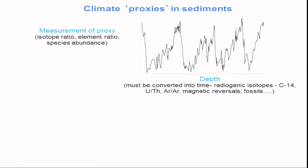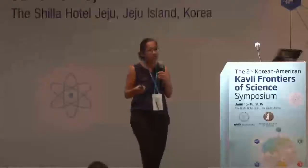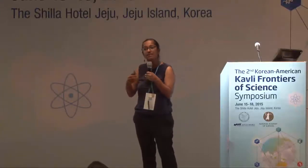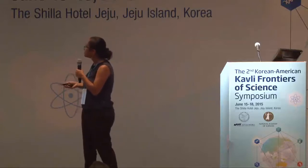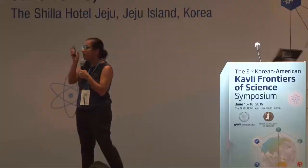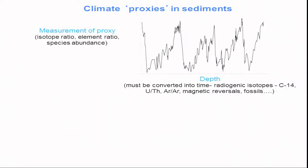What we do in terms of developing our climate records is take the measurement of some proxy and associate a unit of time with it. This, in and of itself, is a whole field of quantitative geochronology that's principally dependent on the measurement of radioisotopes. As mass spectrometers become more and more sensitive, we're suddenly able to look at the timing of climate change and the sequencing of different types of climate changes with a much higher degree of certainty than before. This represents another example of a new frontier in Pleistocene and Holocene paleoclimate.